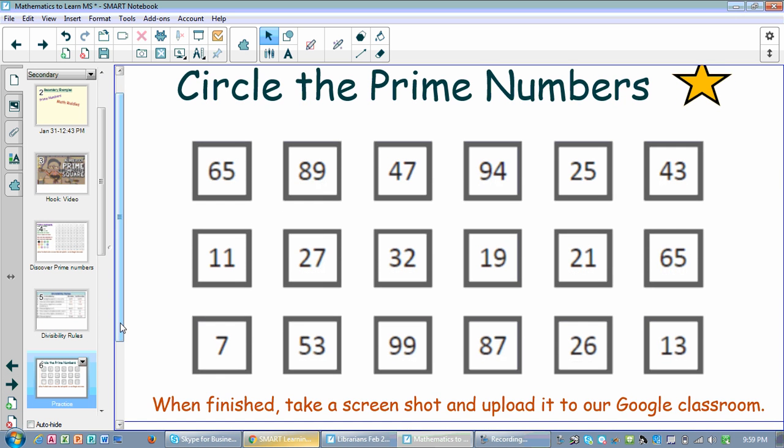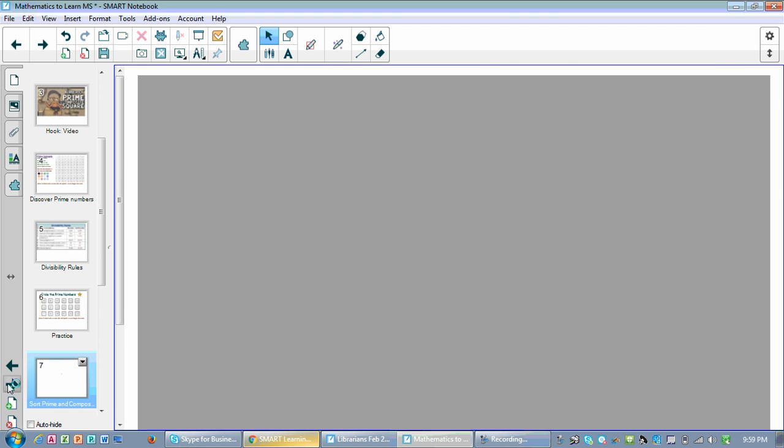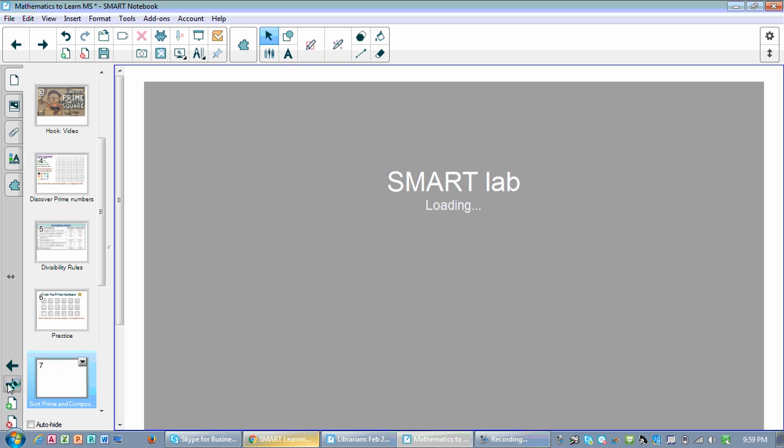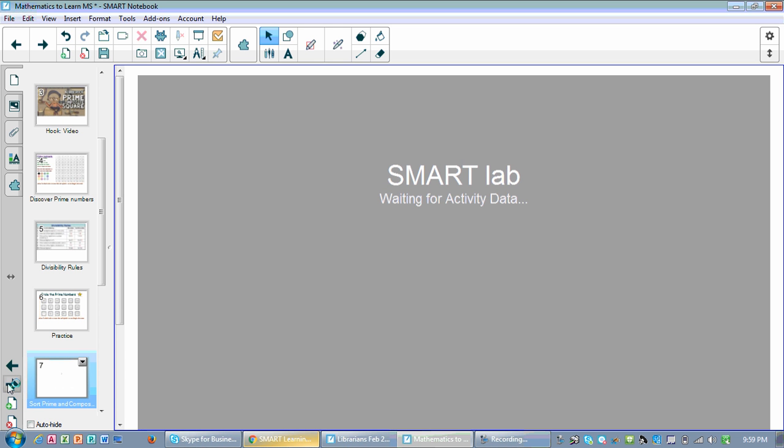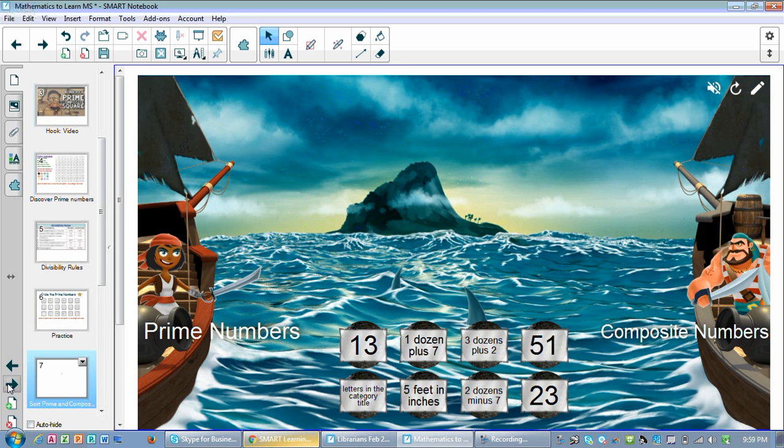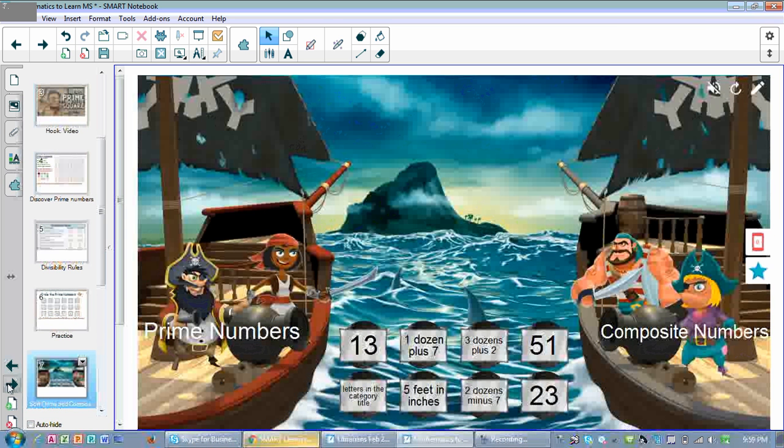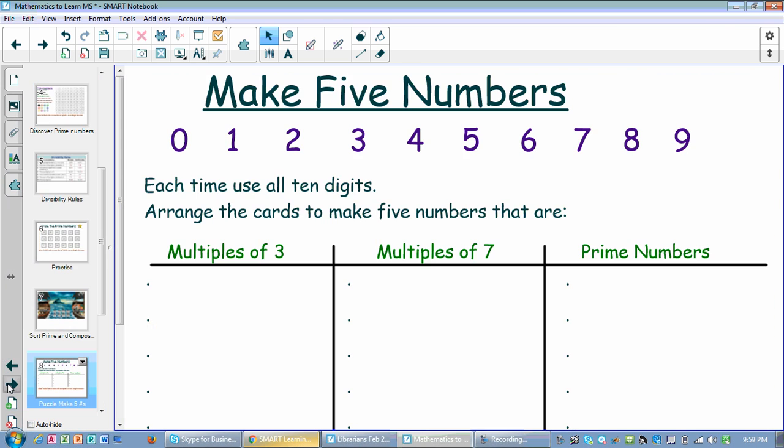And then we begin to check for understanding. So here the students will circle the prime numbers with the pen that will be given to them at the point where they are online. I continue. I have here another checking for understanding. This is a sorting between prime and composite numbers. I have the super sort smart lab activity.